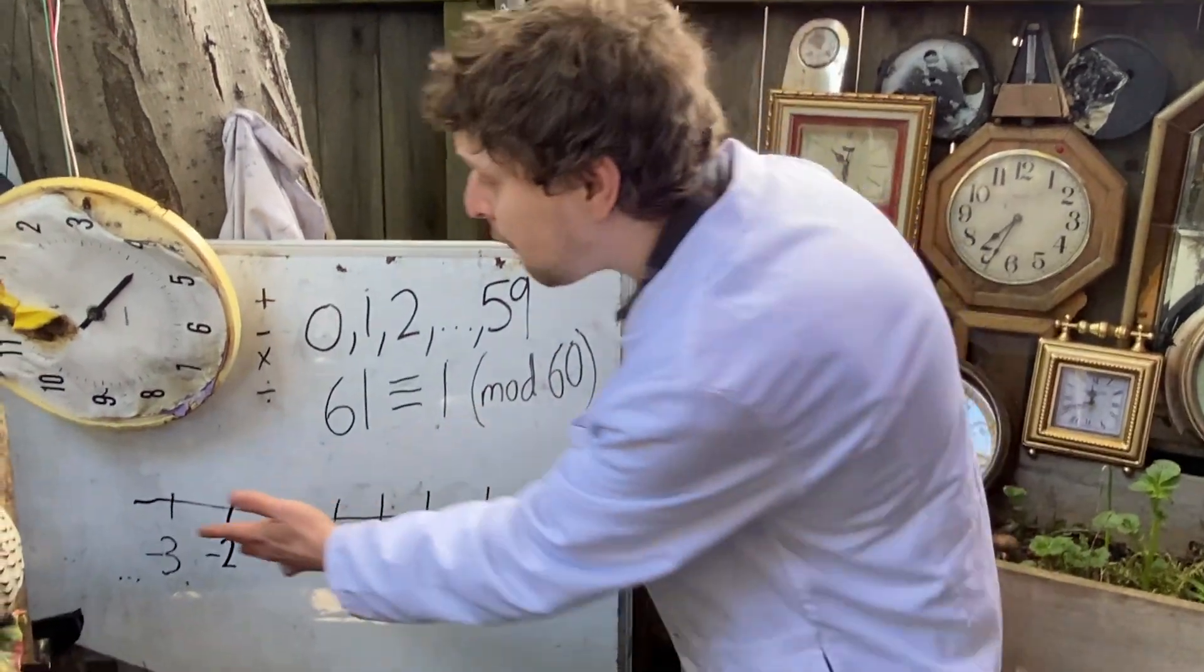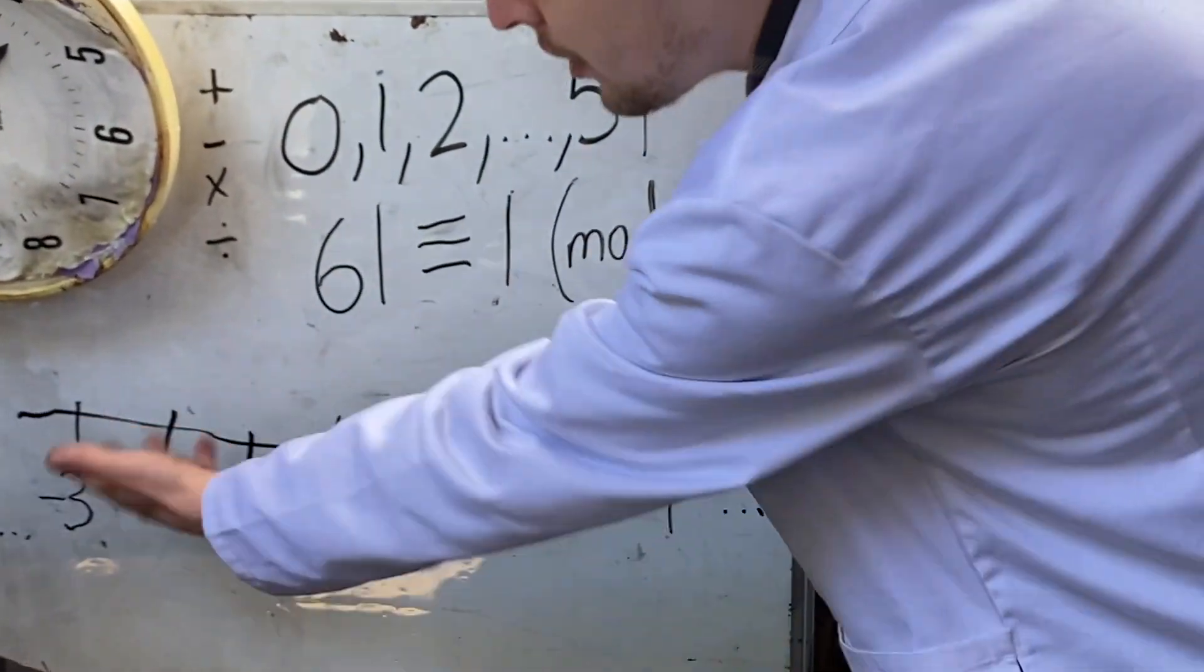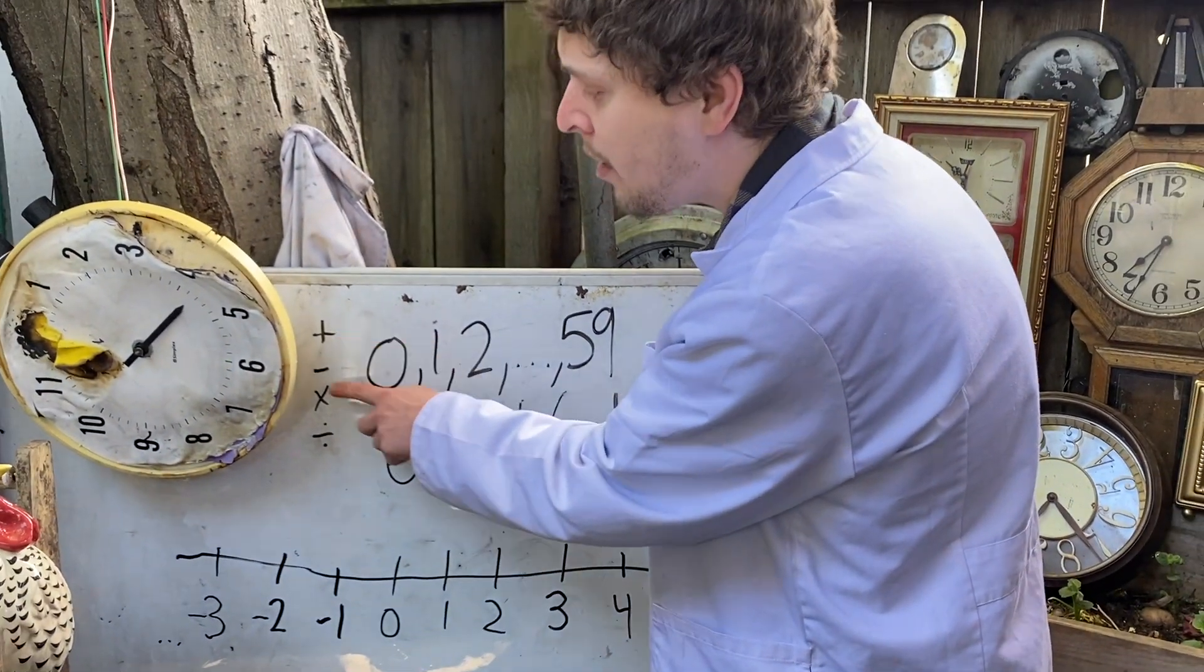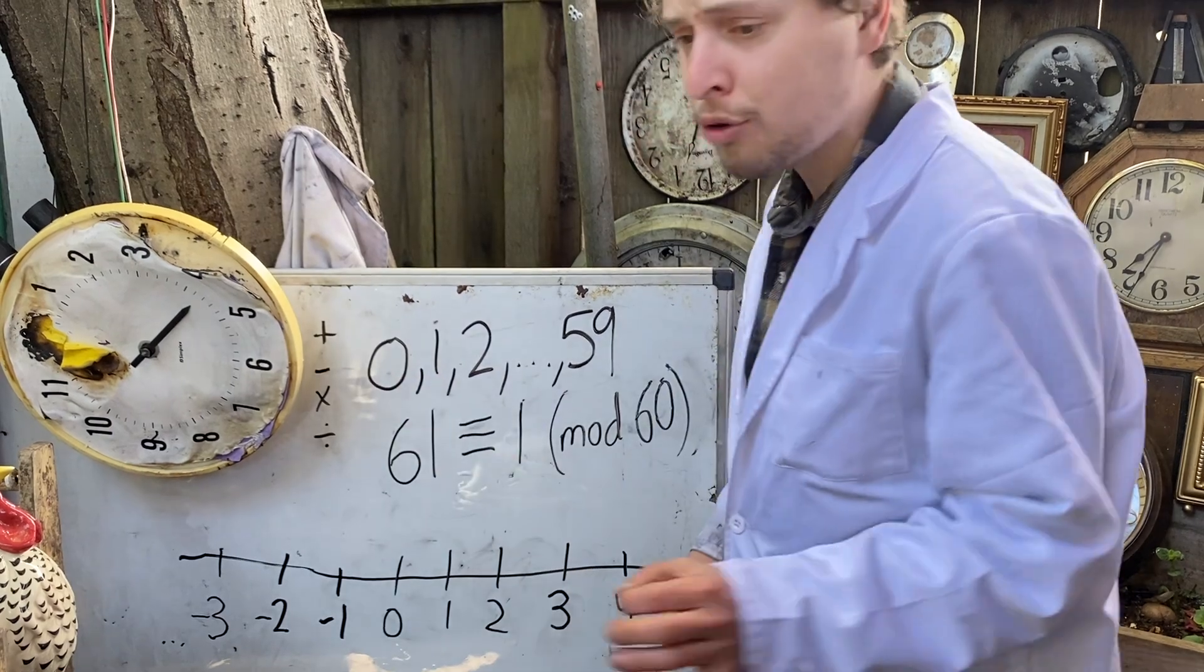When considering the set of all the integers, positive, negative, or zero, that set is closed under addition, multiplication, and subtraction.